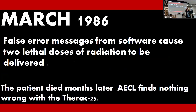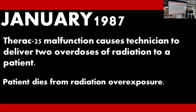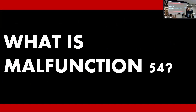In March 1986, false error messages from the software caused two lethal doses of radiation to be delivered to a patient. The patient died months later. AECL investigated but found nothing wrong with the Therac-25, still maintaining that an overdose was impossible. In April 1986, more false error messages, and another patient died from overexposure. The Therac-25 was briefly taken out of commission and looked into by the FDA, who requested some small hardware updates. Right after that, it was reinstated. In January 1987, a Therac-25 malfunction caused a technician to deliver two overdoses of radiation to a patient, who died from overexposure. All cases of the deaths included an error message called malfunction 54 appearing on the screen. Malfunction 54 was not described in the manual given to technicians — it was a cryptic message that would show up, and they could easily bypass it by pressing P on the keyboard to proceed.